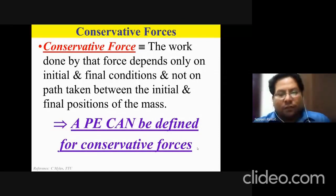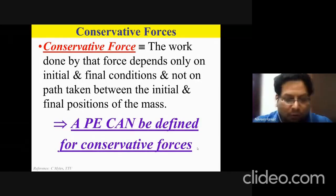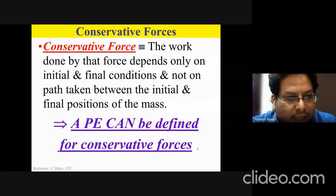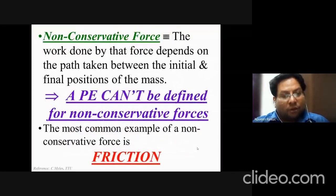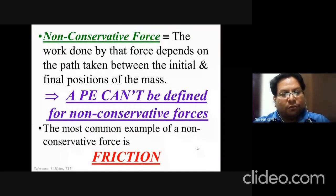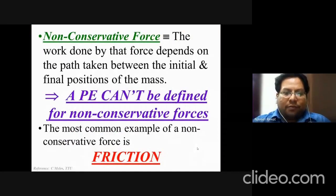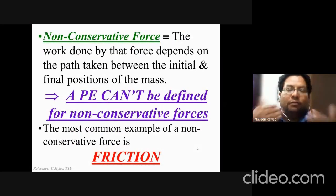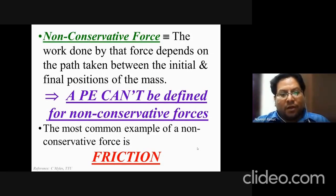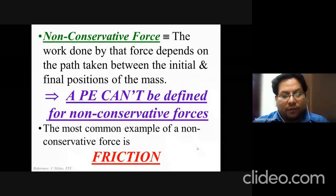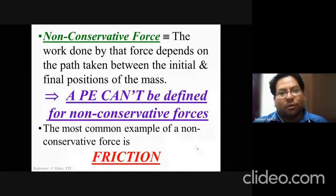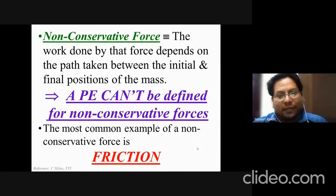For conservative forces, you can define a potential energy. If there are conservative forces, there are also non-conservative forces — for these, the work done depends on the path taken between the initial and final positions, and you cannot define a potential energy. A common example of a non-conservative force is friction. You have probably never heard of the potential energy of friction — friction is just a force with no associated potential energy.